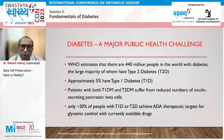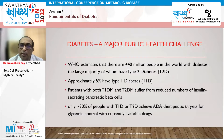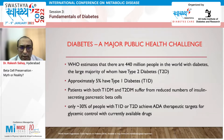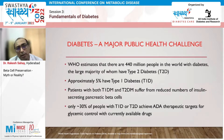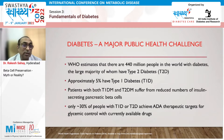If you look at the various factors contributing to the development of diabetes, we see that beta cell dysfunction or beta cell loss is an important contributor. In type 1 diabetes, it is a major factor — people develop type 1 diabetes because of autoimmune destruction of beta cells.